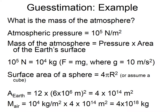CO₂ concentration has gone from 280 to 400 parts per million volume. Parts per million volume means: if you had a million cubic meters of atmosphere, one of those cubic meters would be pure CO₂. We'll treat it as parts per million by mass to simplify.